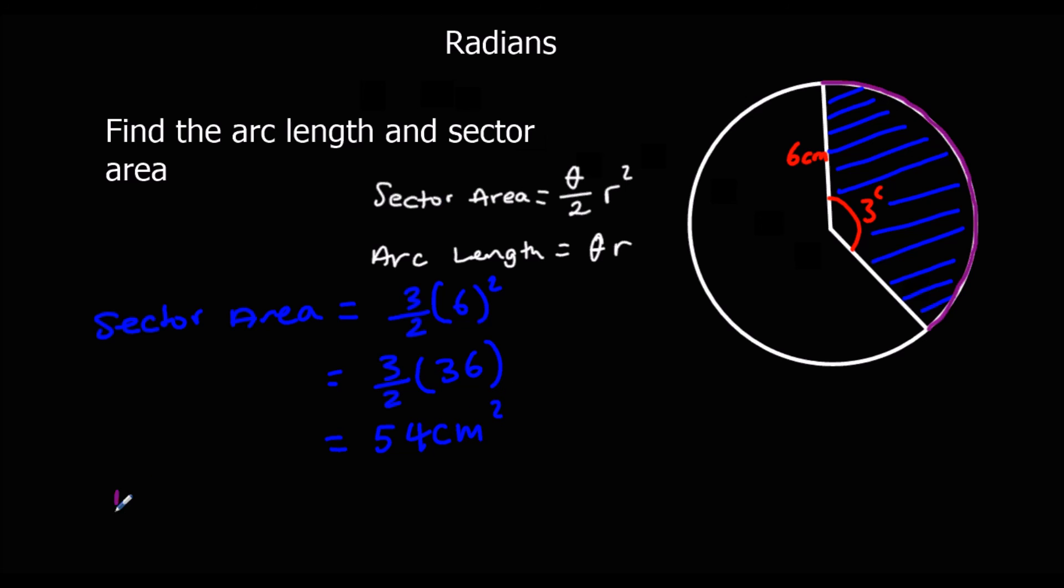Arc length is theta times r, which is three times six, which is 18 centimeters.